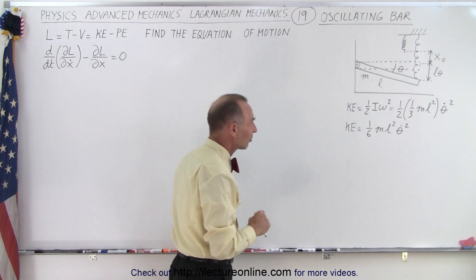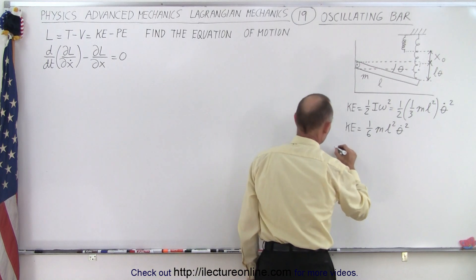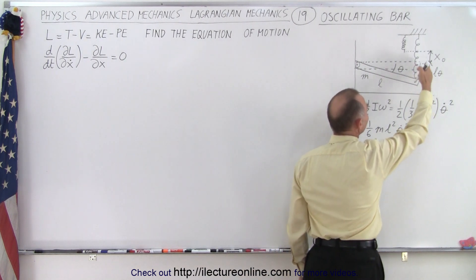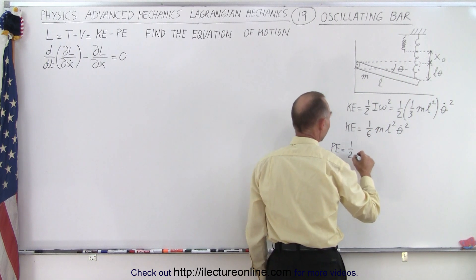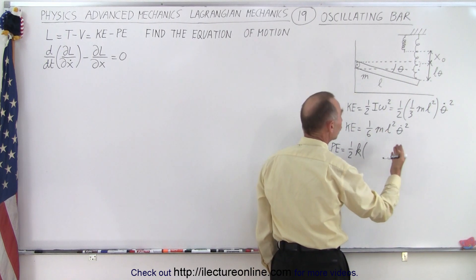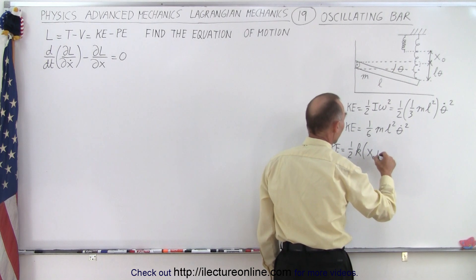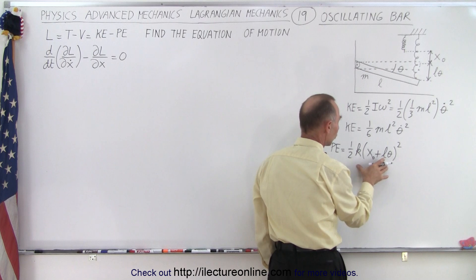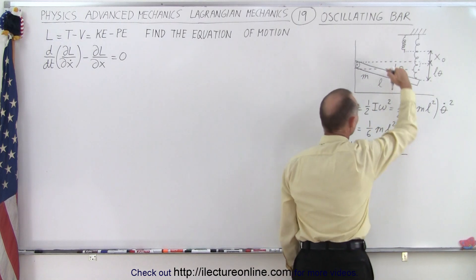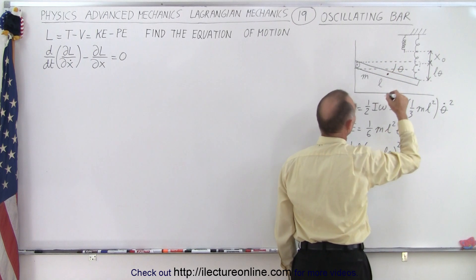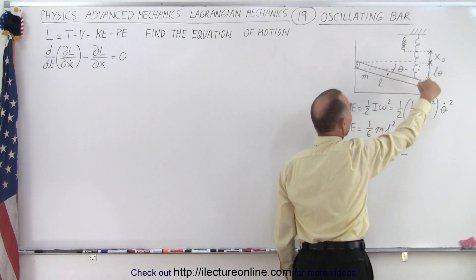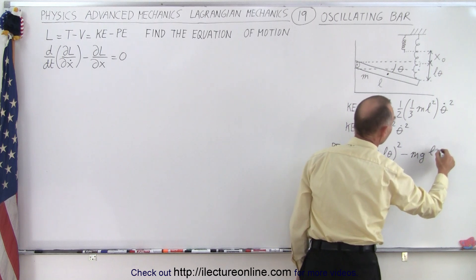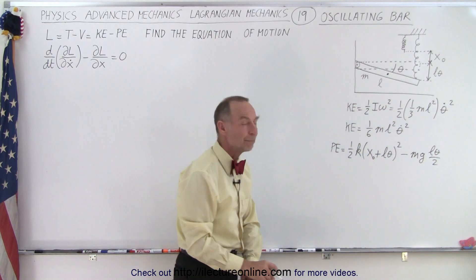Now we need the potential energy, which is a bit more tricky. The potential energy equals the energy stored in the spring, which is (1/2)k times the total elongation squared — that elongation is (x_naught + lθ)². Then we subtract the gravitational potential energy lost: the center of mass is at the middle of the bar, so the drop in height is (lθ)/2, giving a term of mg(lθ/2).